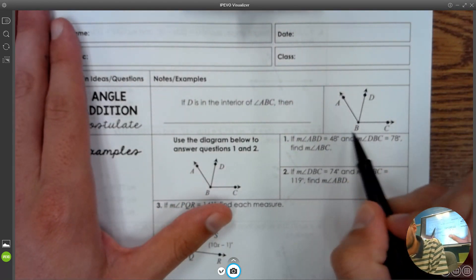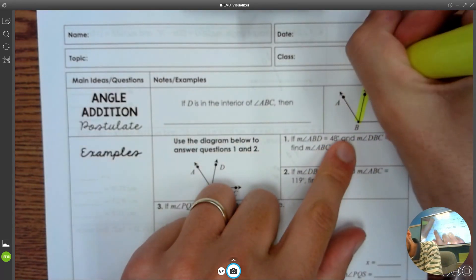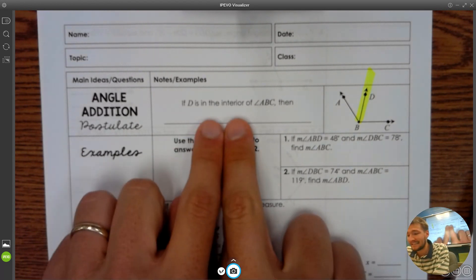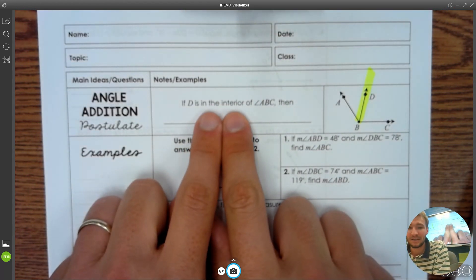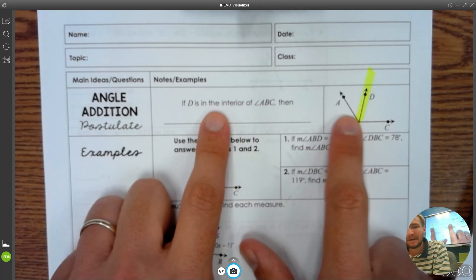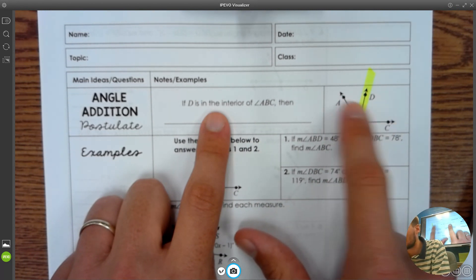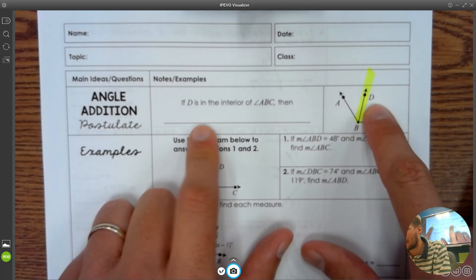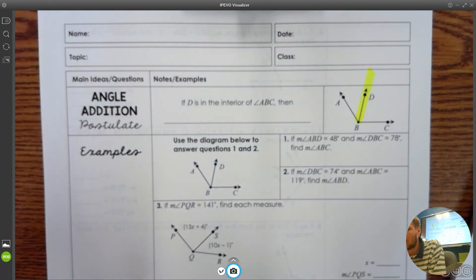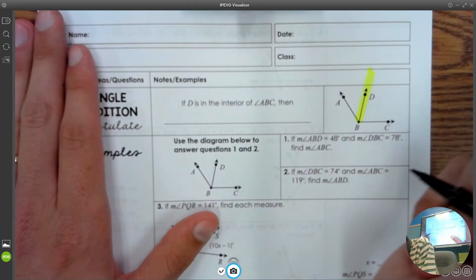When it comes to this picture here, we want to make sure that we know that D is inside, in the interior, a word that we're going to use a lot. And I also want to make sure to point out, we're not sure that these are two equal halves. D was not stated to be a bisector. There's no nice curves in the corners. So we can't trust that these are the same angles.